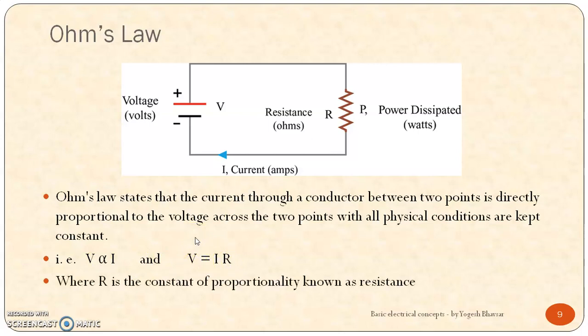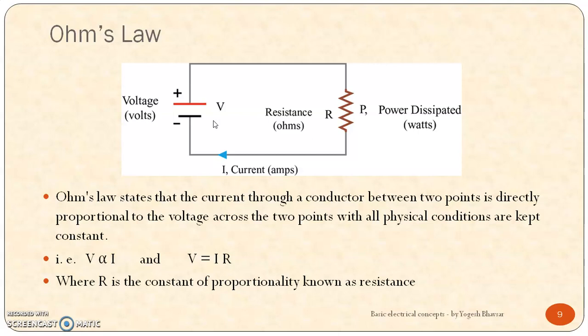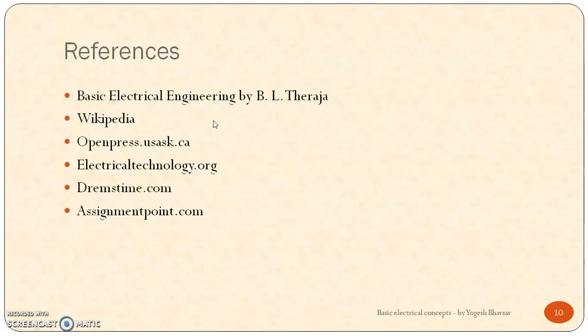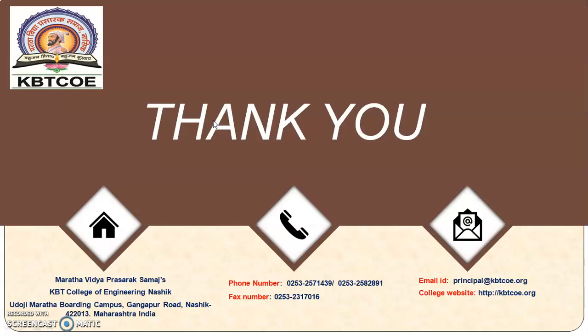To remove the proportionality we insert a constant, and according to Ohm, this R is the constant of proportionality known as the resistance of the conductor. Here in this circuit the conductor is represented by resistance R, the current flowing is I, and the voltage applied across the conductor is V. So these are the various basic concepts related to electrical engineering that you should know before going to study the details. Here are the references used for making this presentation. Hope you understood all the concepts. Thank you for watching this video.